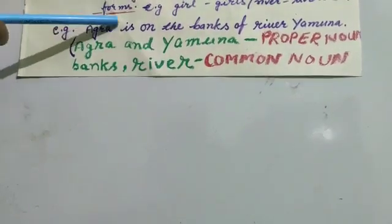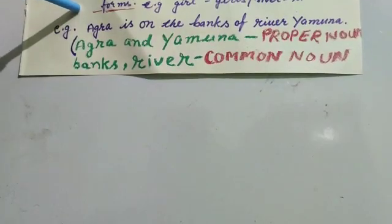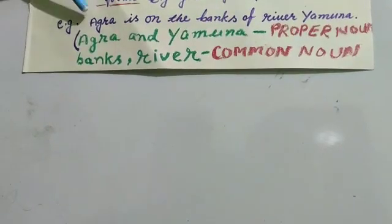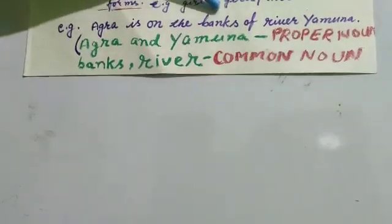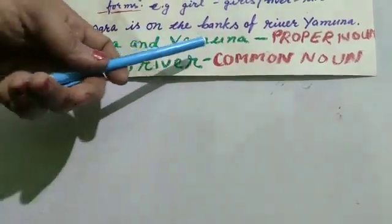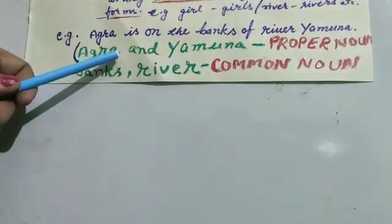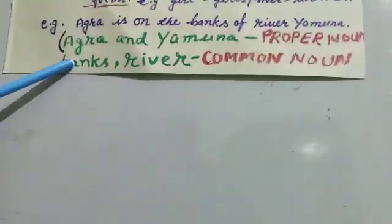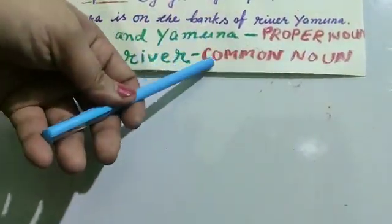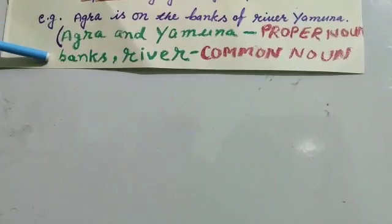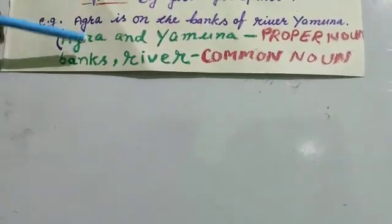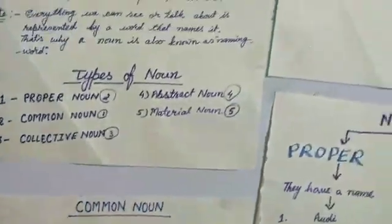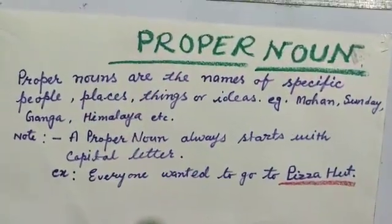Here is an example that will be very helpful to understand common and proper nouns easily. Take the sentence: 'Agra is on the banks of river Yamuna.' Here, Agra and Yamuna are particular names — Agra is the name of the city and Yamuna is the name of the river, so they are proper nouns. But the words 'banks' and 'river' are written in general, no specific specification is shown — these are general words, so they are common nouns.